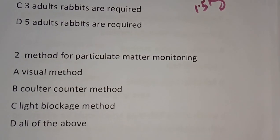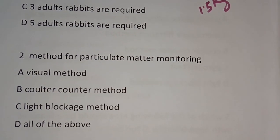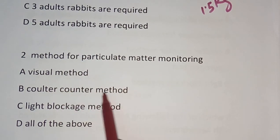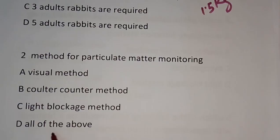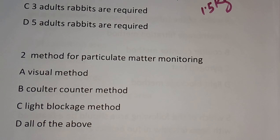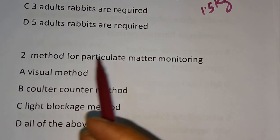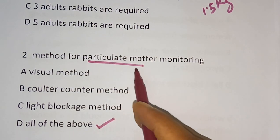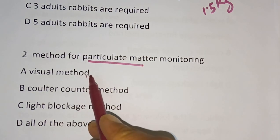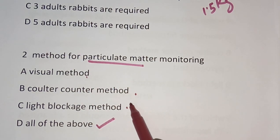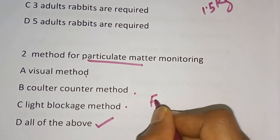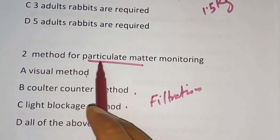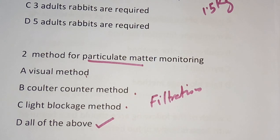Question 2: What is the method for particulate matter monitoring? Options are visual method, counter method, light blockage method, all of the above. The correct answer is all of the above. The different methods are visual method, counter method, light blockage method, and filtration method.